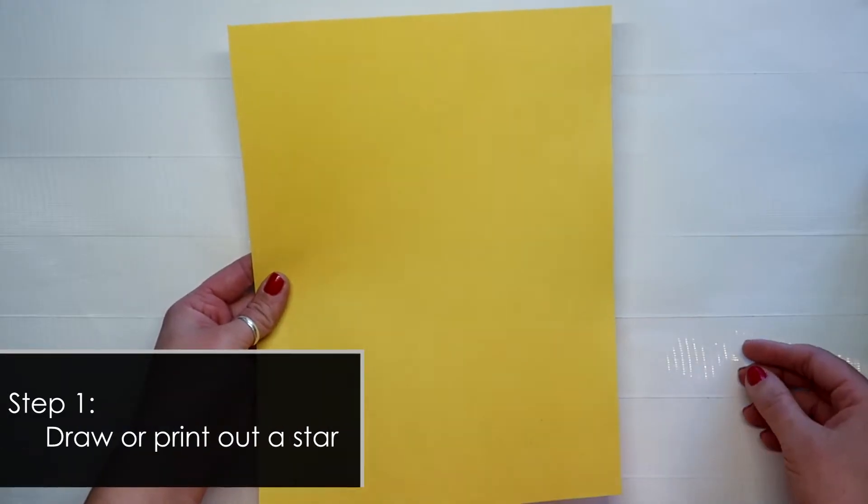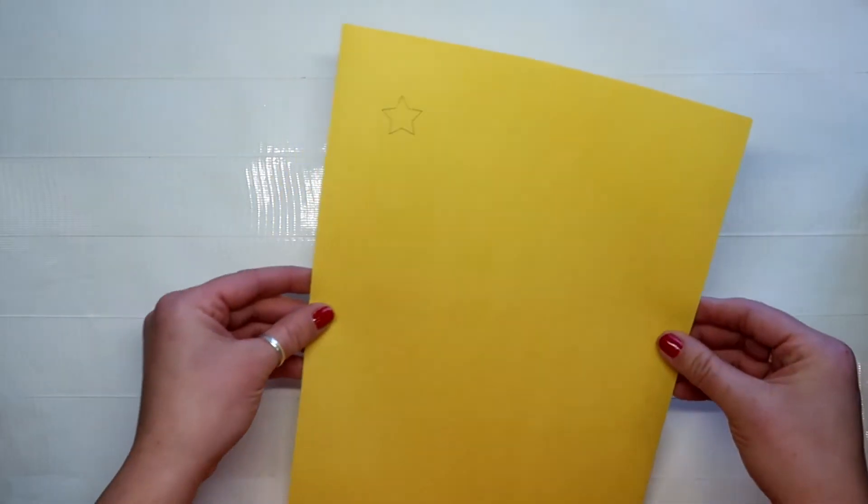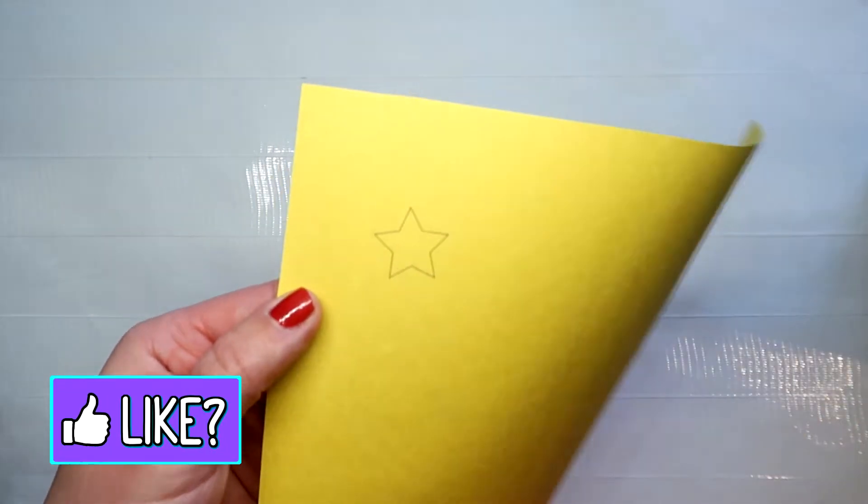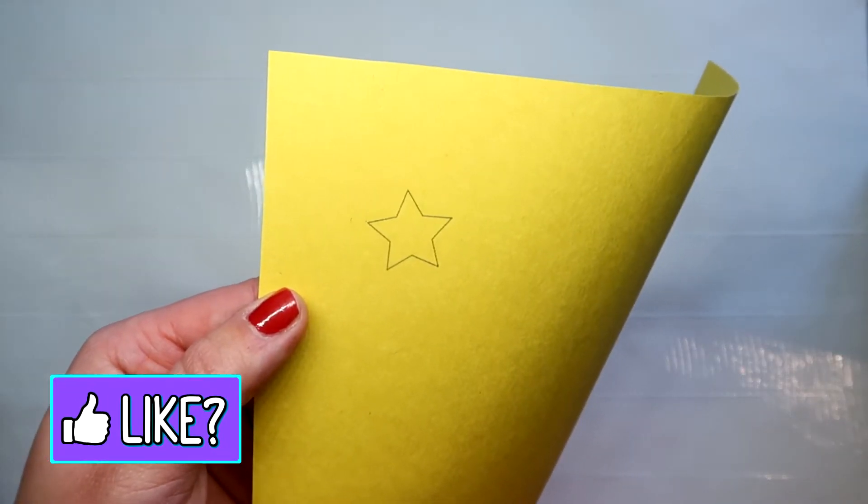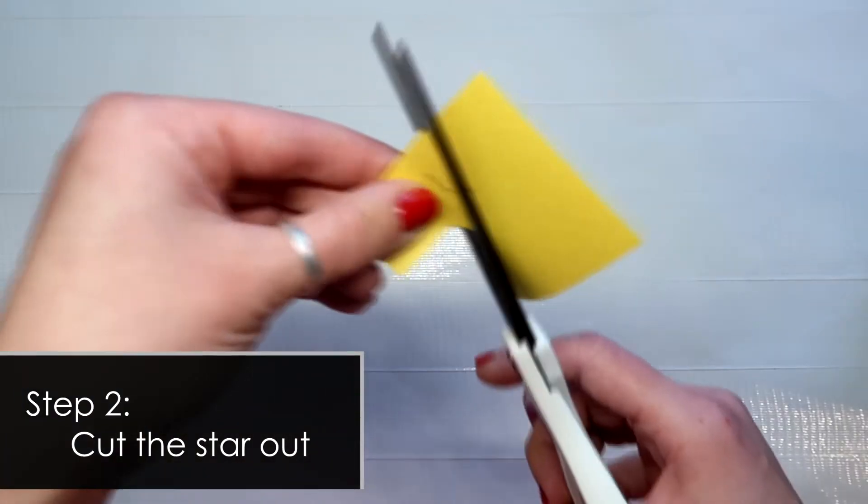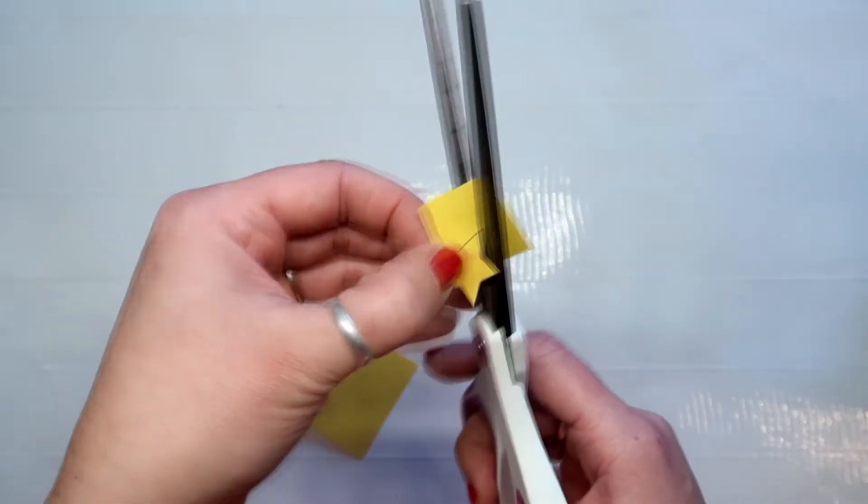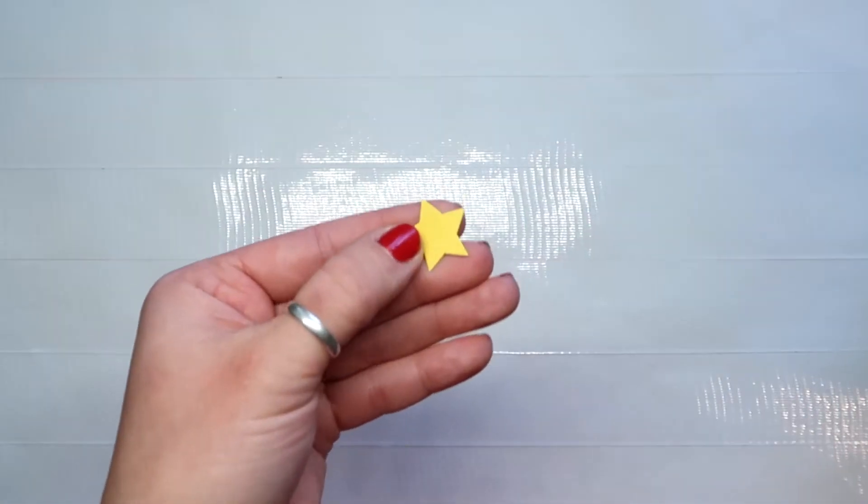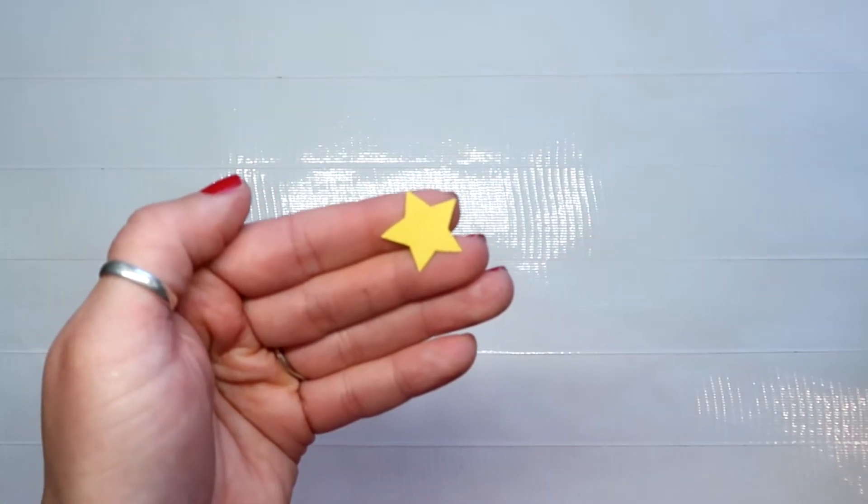Start with your yellow sheet of paper and either cut out a star or you can use the template that I've included in the video and you can print this star on the sheet of paper. Cut it out. Once you have your star you can set that aside.